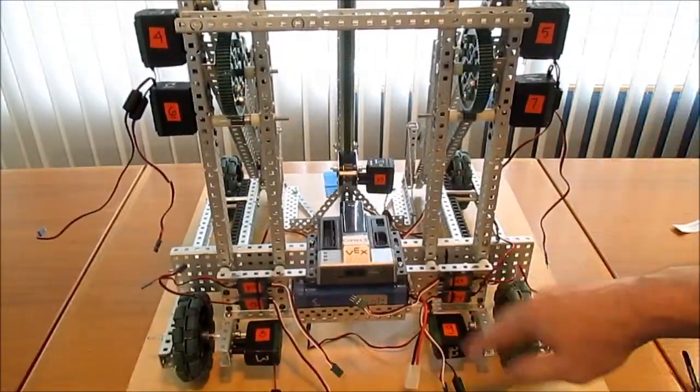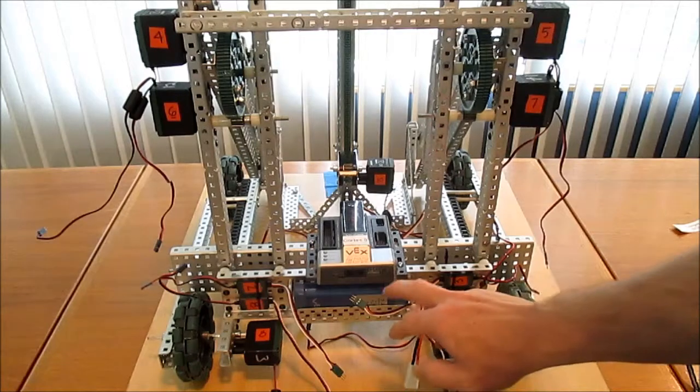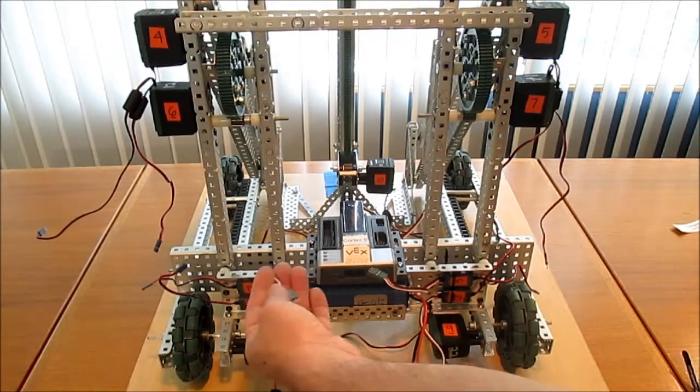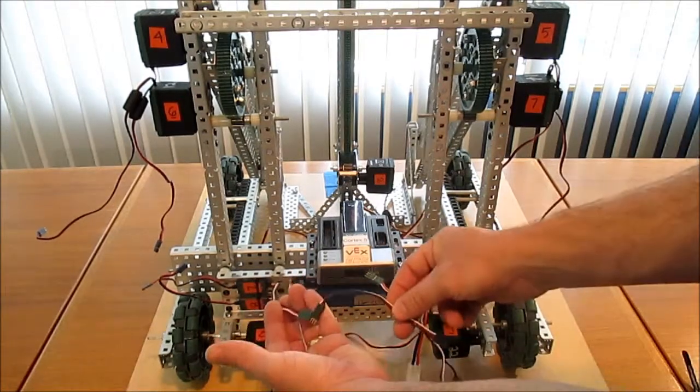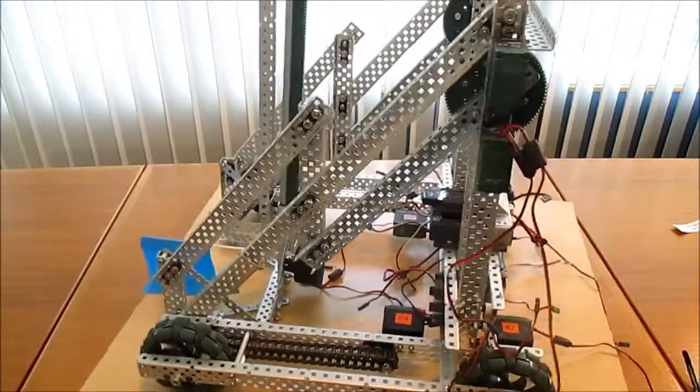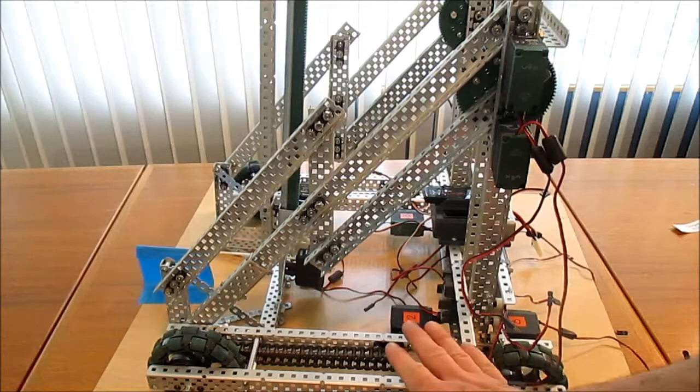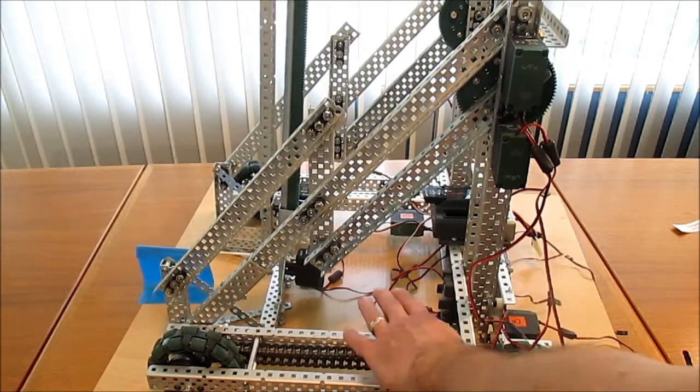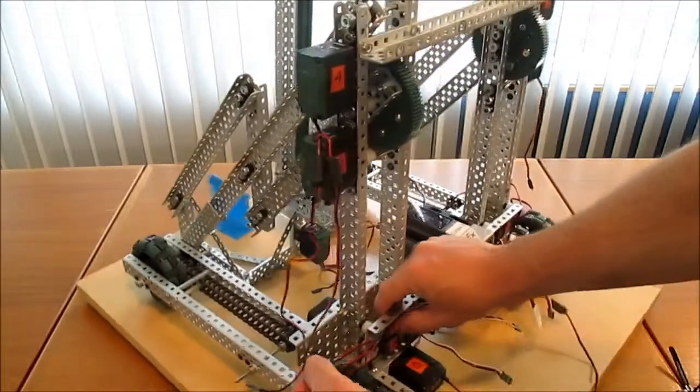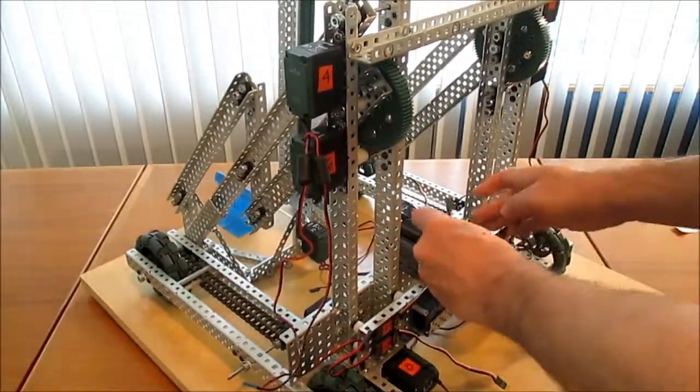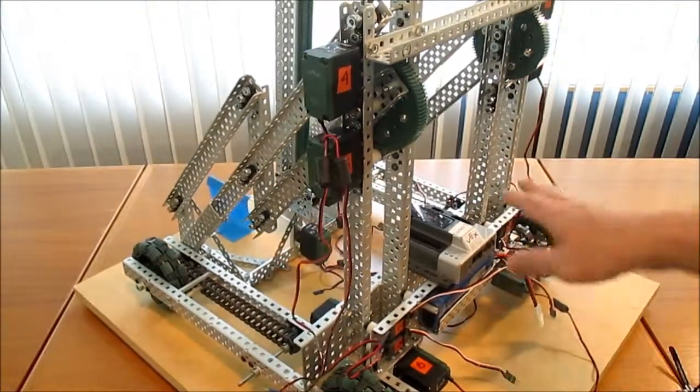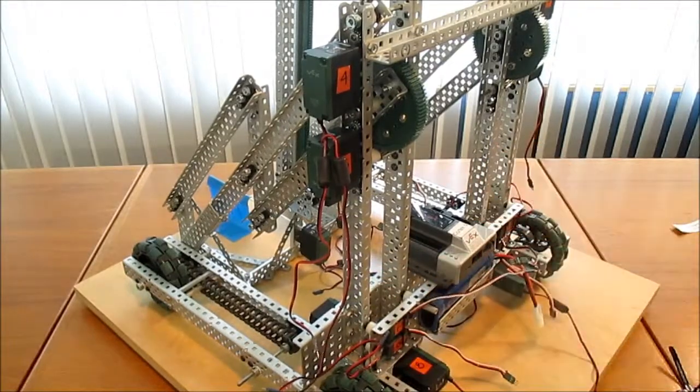I've also numbered all the motors based on our diagram. The motor controllers can almost all reach the Cortex without an extension. These two will require a short extension wire to connect. The last bit of advice on wiring your robot is to go one motor at a time. So you take your number two motor and you connect it to its number two motor controller and then you connect the motor controller to port number two. By going one at a time it's actually a lot less confusing than wiring everything and then trying to get these in the right place.